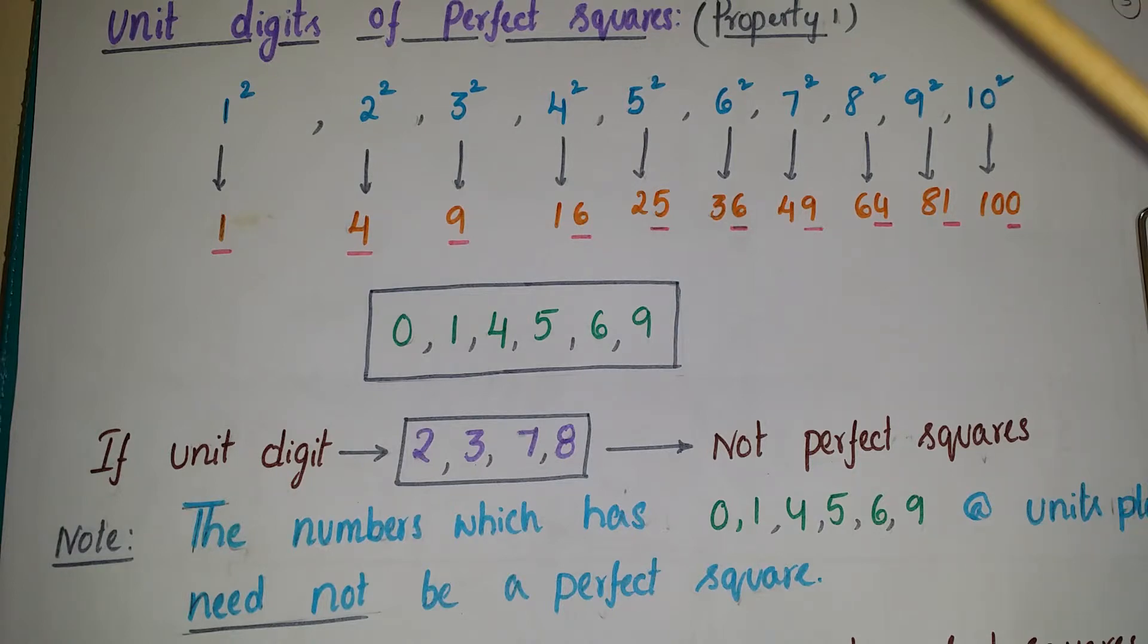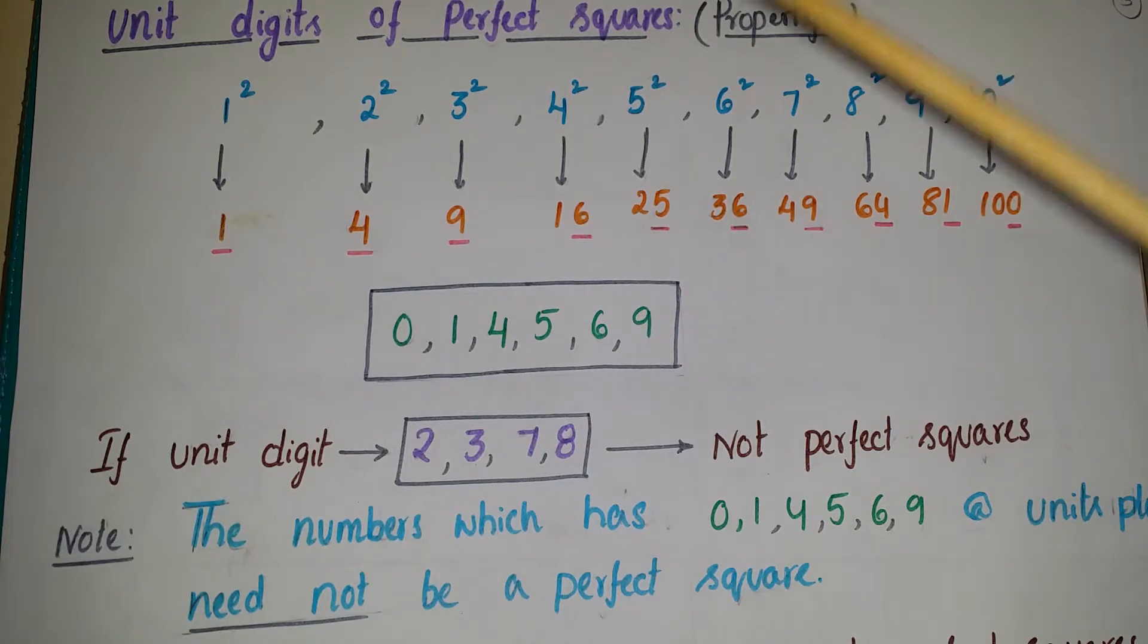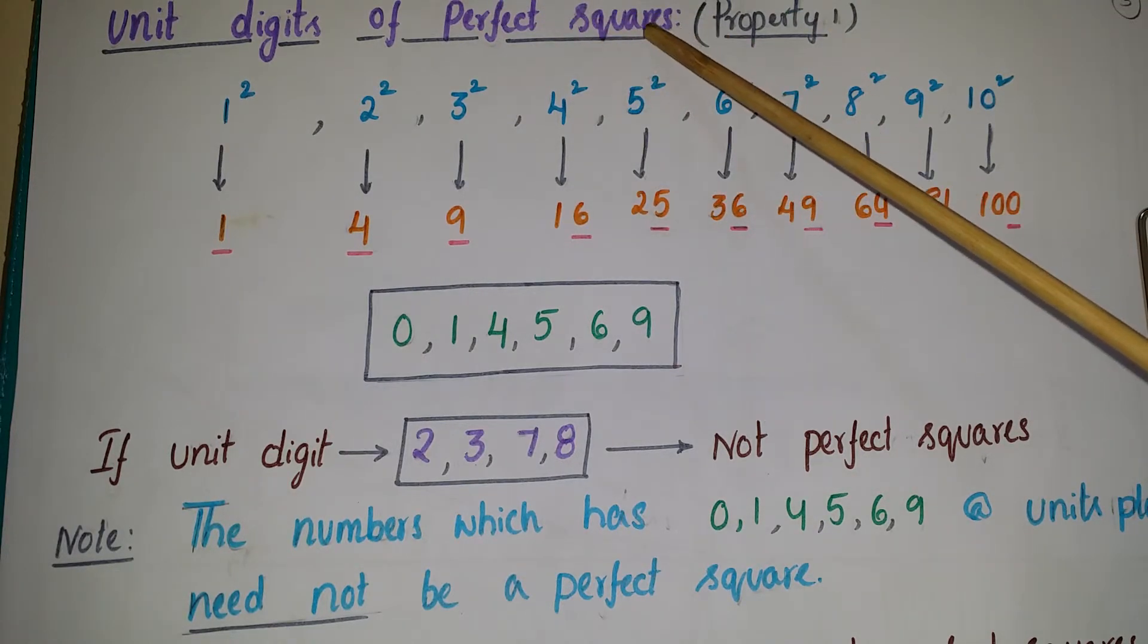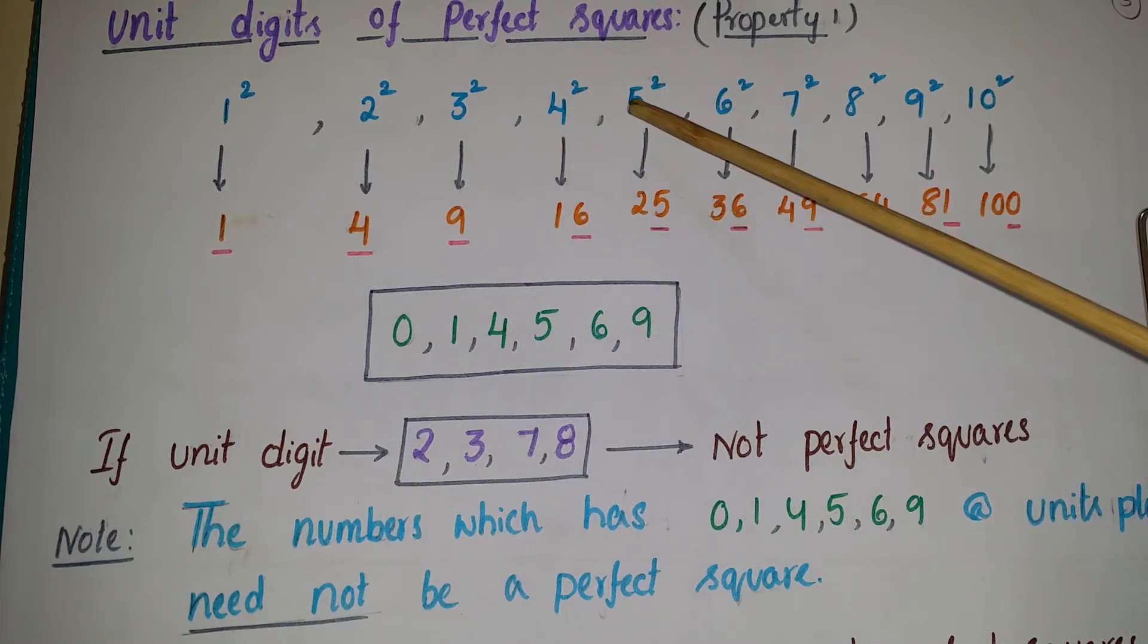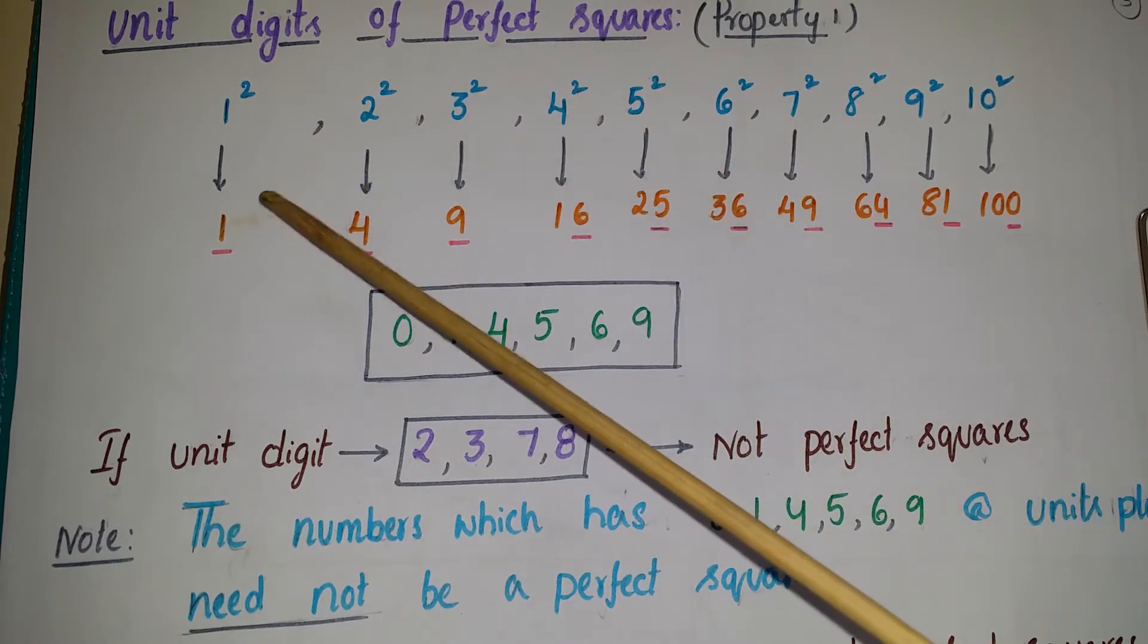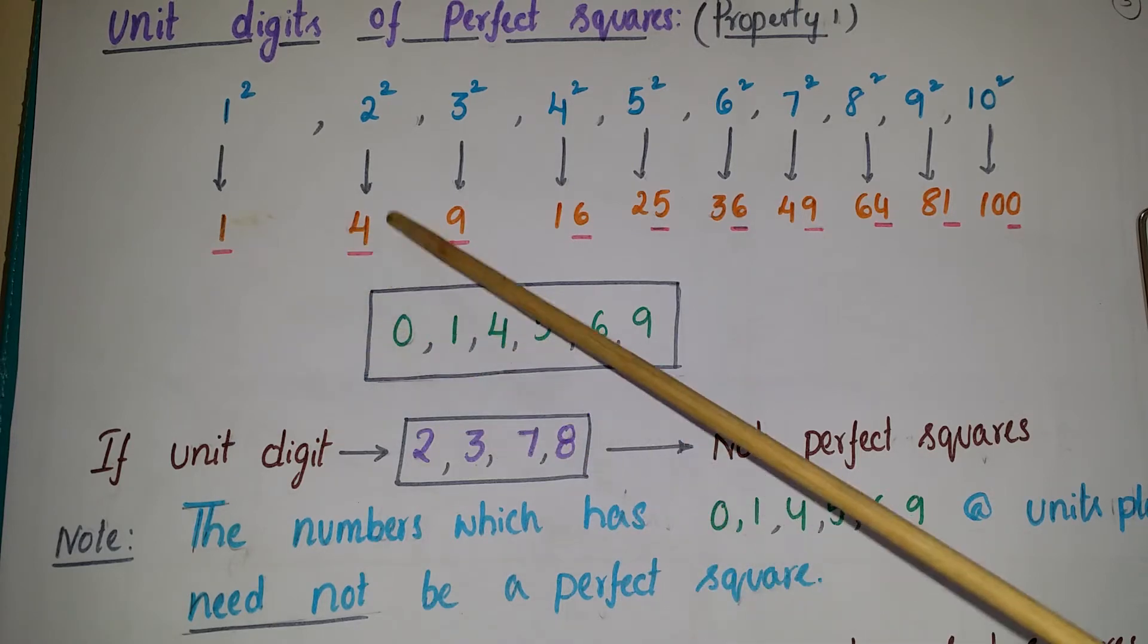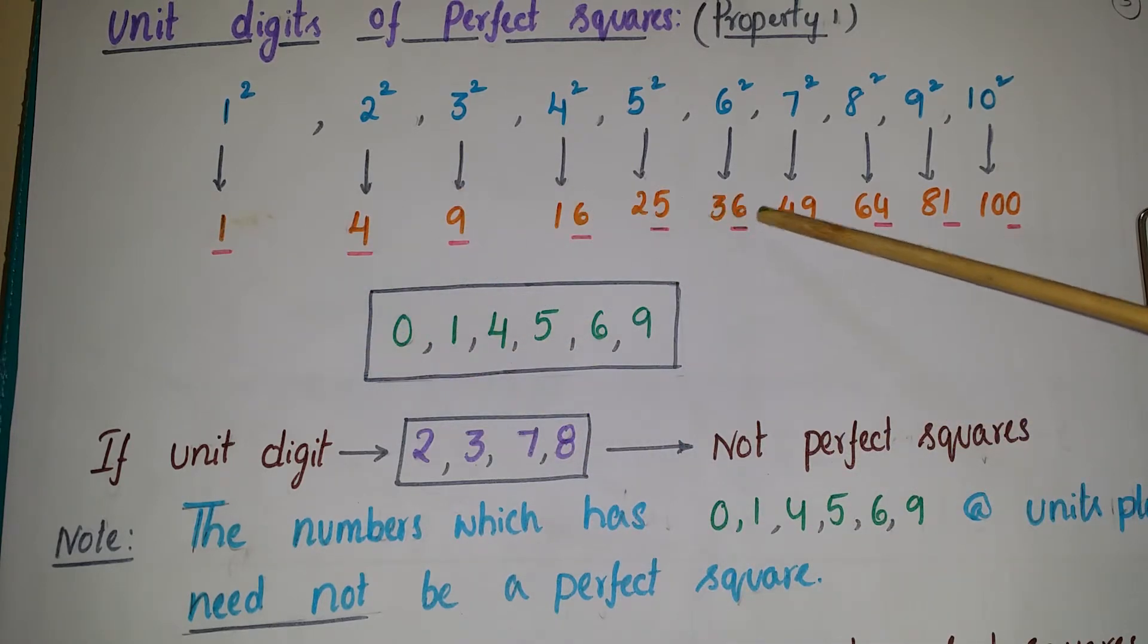Perfect squares have some properties. This is the first property: unit digits of perfect squares. See the perfect squares here—1 square, 2 square, 3 square, 4 square, 5 square, etc. We can write these numbers like this: 1, 4, 9, 16, 25, 36 like this. If you observe these perfect squares...